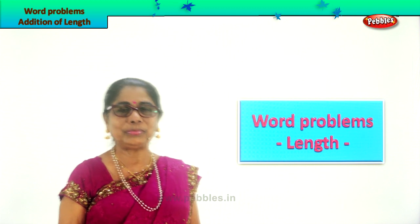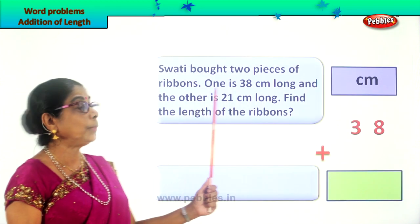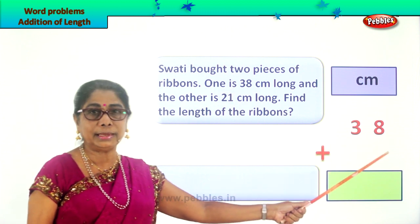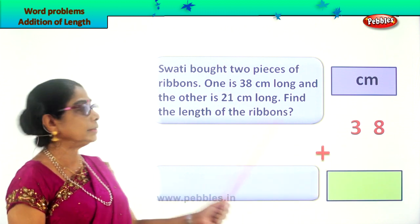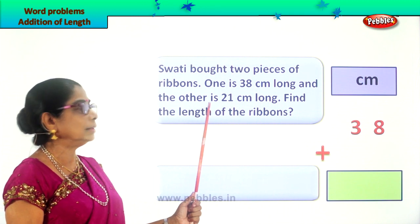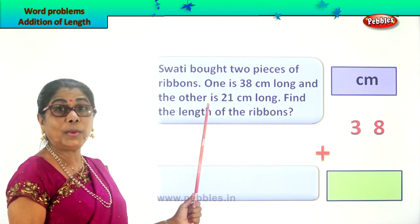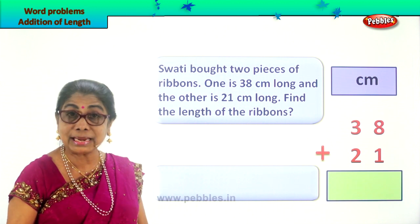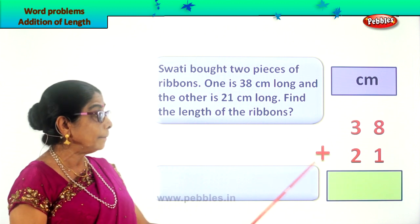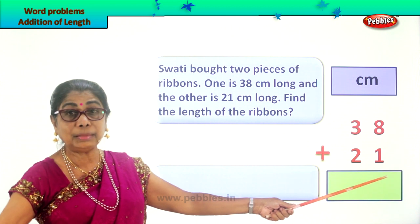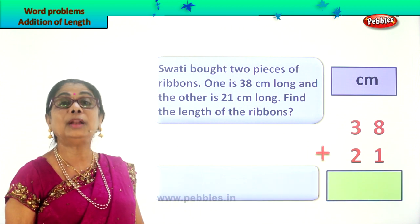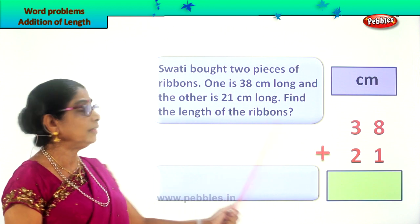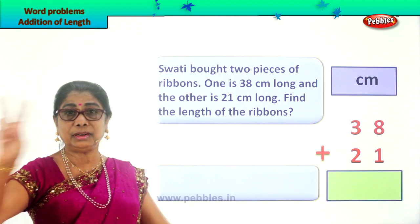The length of one piece of ribbon is 38 centimeters, plus the length of the other ribbon is 21 centimeters long. So 38 centimeters for one piece of ribbon plus 21 centimeters for the other piece of ribbon. We are supposed to find the total length — what is the length of the two ribbons?